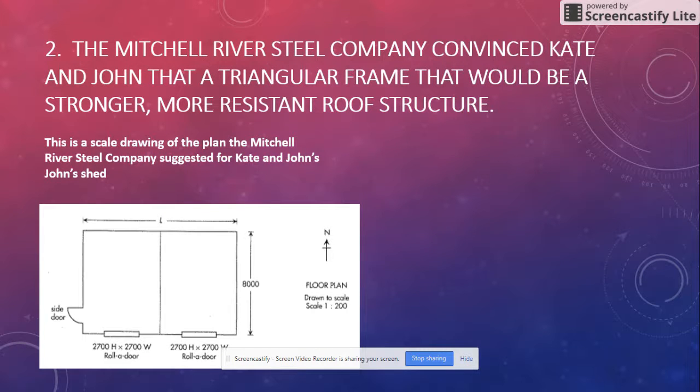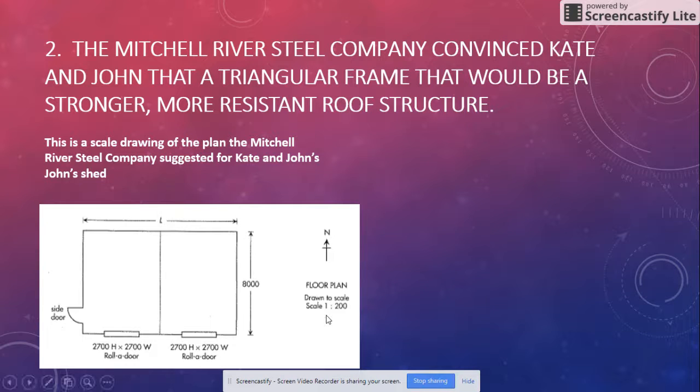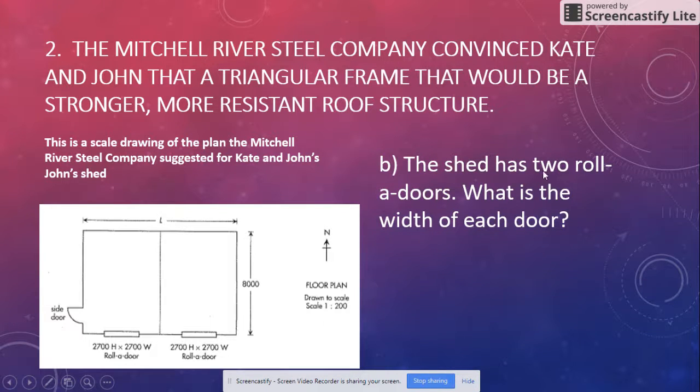The Mitchell River Steel Company convinced Kate and John that a triangular frame would be a stronger, more resistant roof structure. This is the scale drawing of the plan Mitchell River Steel suggested for Kate and John's shed. This is their shed, that's their door, they've got two roller doors in the front.